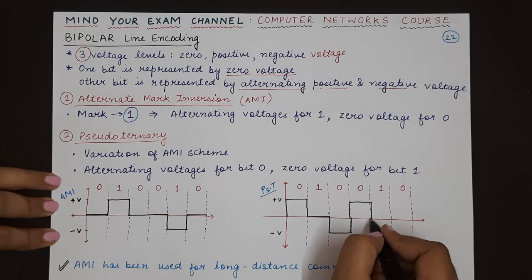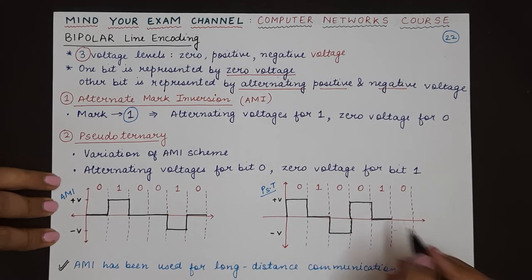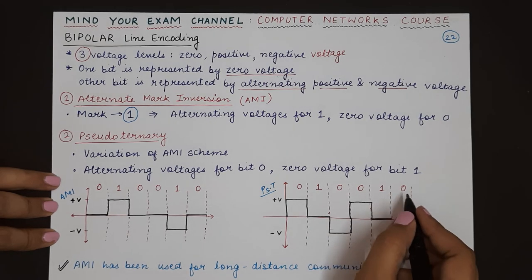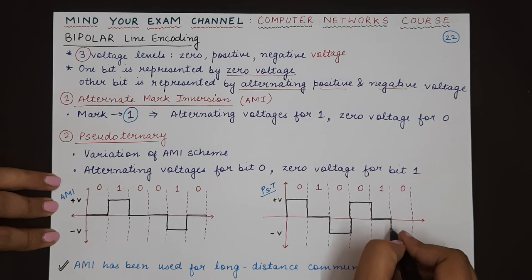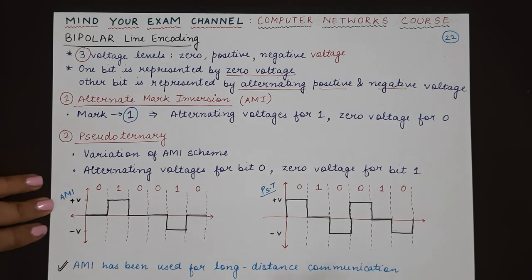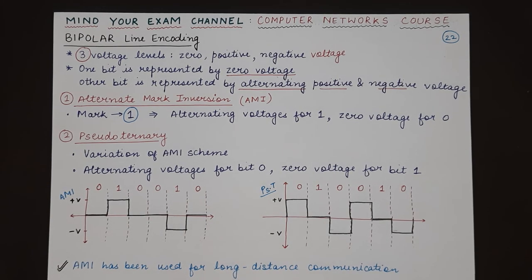so we maintain at zero voltage. And the next is zero. Last time zero was represented as positive, so this time it will go down to negative V voltage. This was all about bipolar line coding scheme.